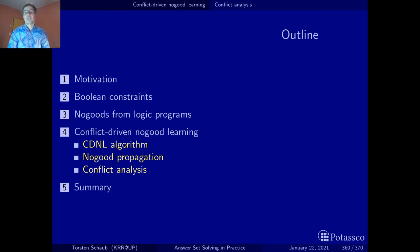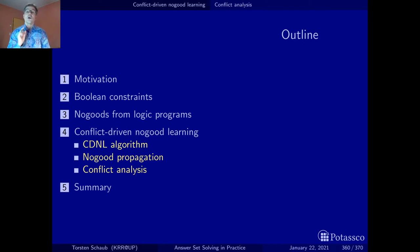Last but not least, let us look at our algorithm for conflict analysis. The purpose of this algorithm is to translate the initially violated conflict no-good into another conflict no-good that has a unique implication point. This means it has a single literal from the current decision level.